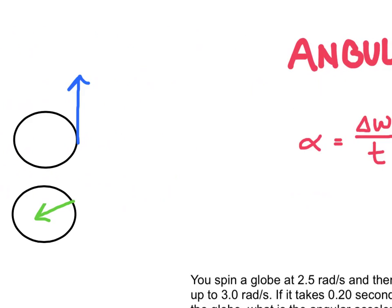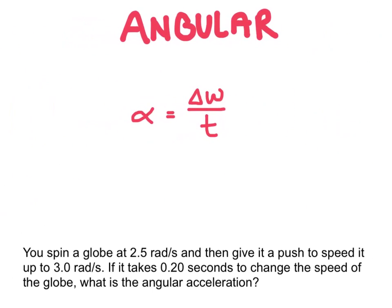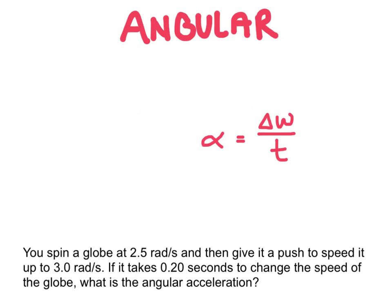Angular acceleration is really based off of linear acceleration — the acceleration that we already know about. To define acceleration: acceleration is the rate at which velocity is changing. The equation for linear acceleration uses the delta symbol, which means 'the change in,' and we have change in velocity over time.